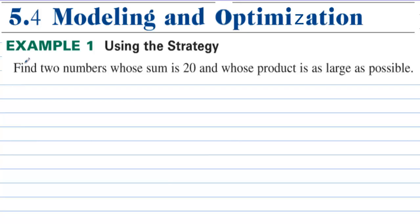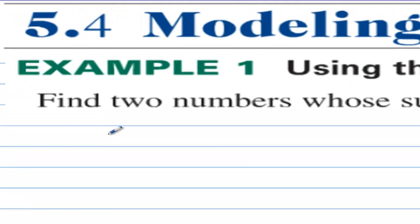5-4 Modeling and Optimization, Example 1. Use the strategy: Find two numbers whose sum is 20 and whose product is as large as possible.